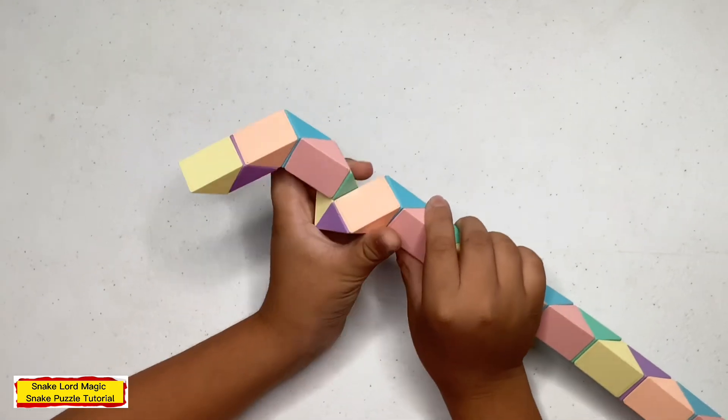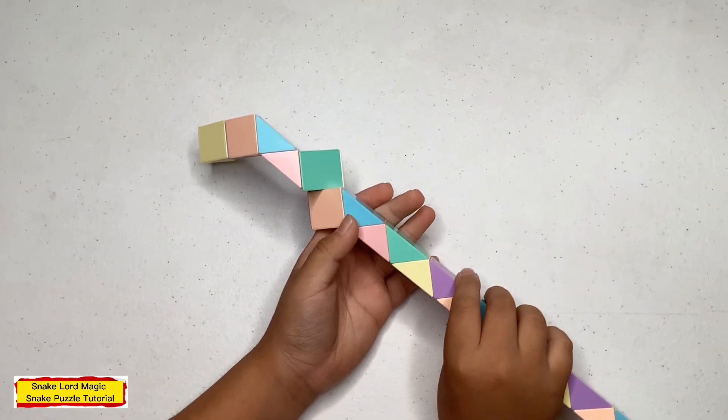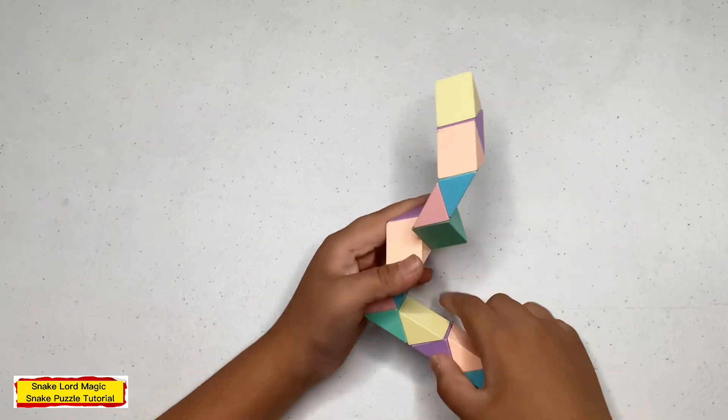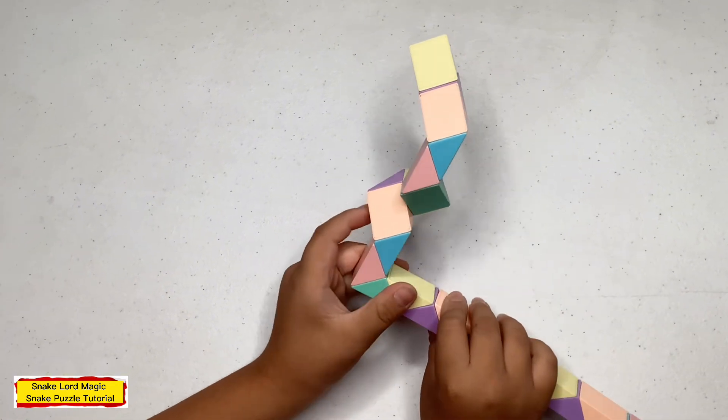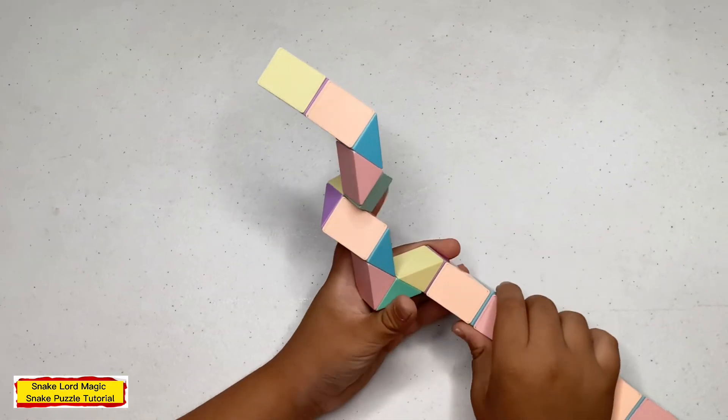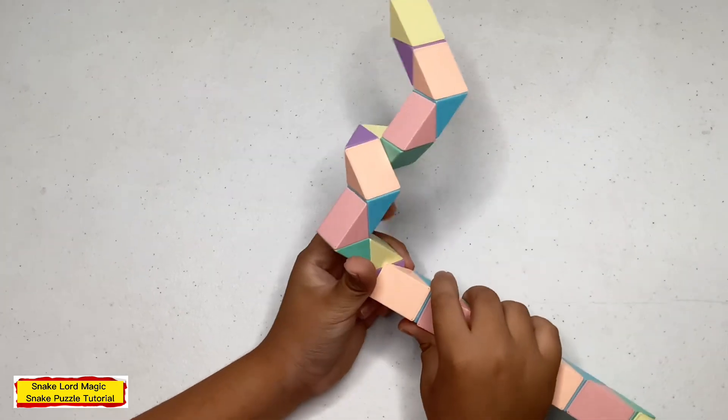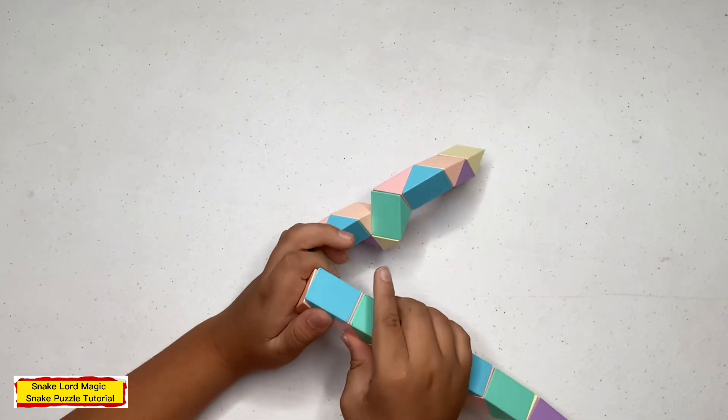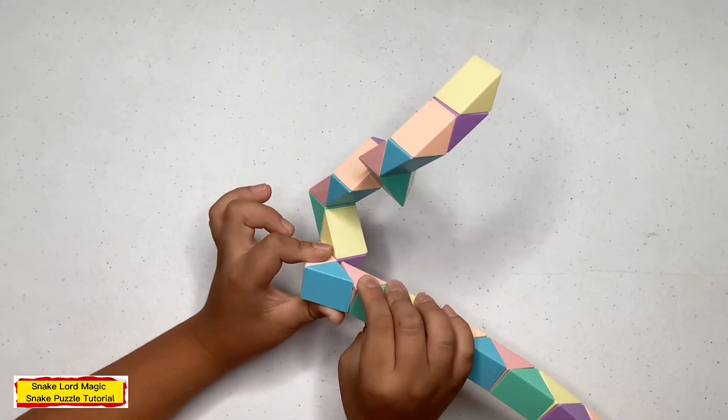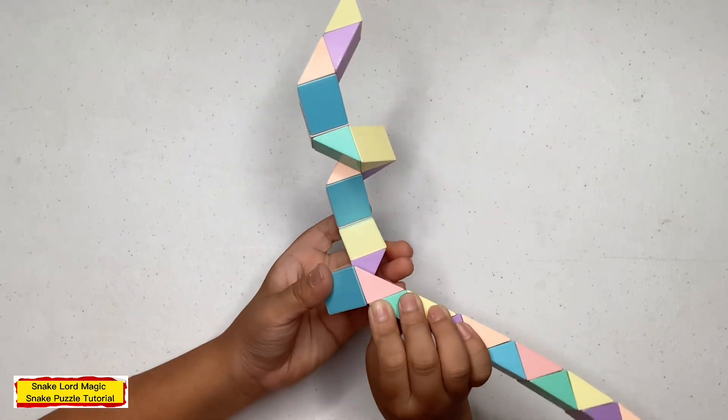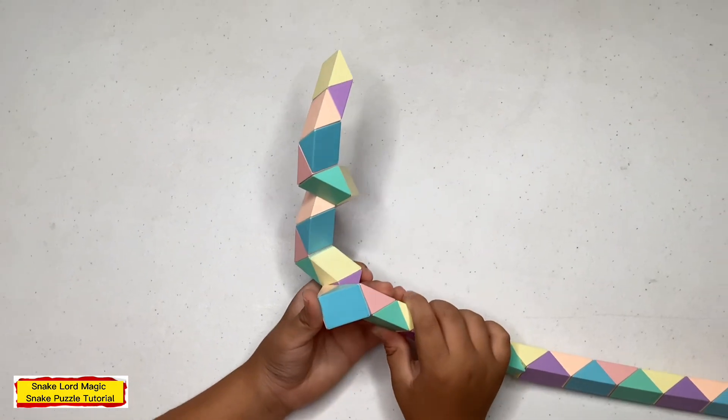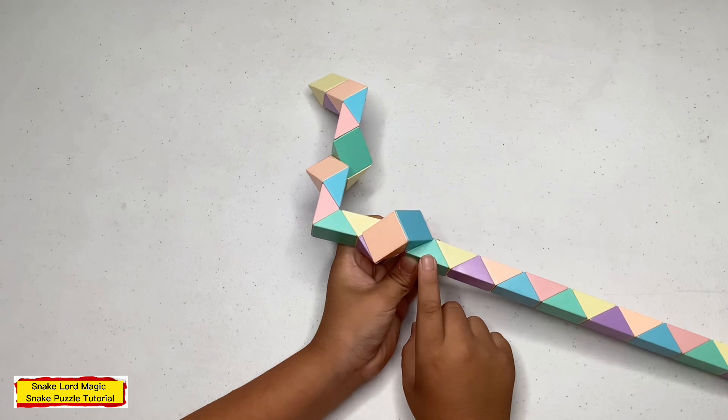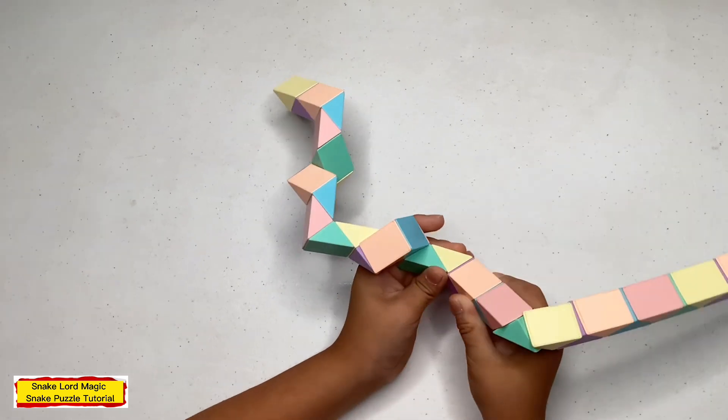Now turn this one towards you. Now count two, one, two and turn this one away from you. Now count two, one, two and turn this up. Hold on to the right. Now turn this piece down. Now turn this green one to the right. Now count two, one, two and turn this one towards you.